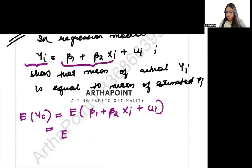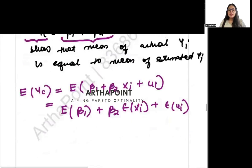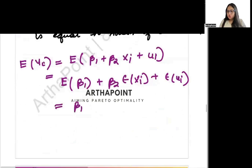This will go ahead and give me E of beta 1 plus beta 2 E of xi plus E of ui. This will go ahead and give me beta 1 plus beta 2 xi plus expected value of xi. You can just put E of xi if you require so. Plus expected value of the error term will be 0.